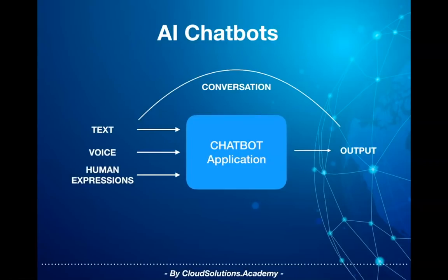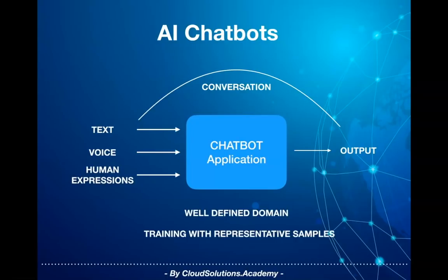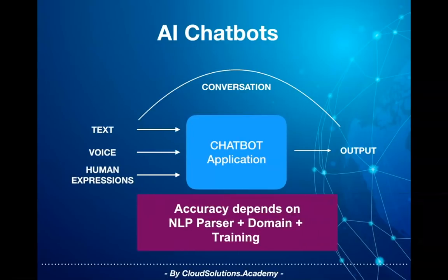A chatbot works well when the domain is well understood by the AI system. As the AI chatbot relies on NLP to understand the semantics of the input message, unless the NLP parser is trained on the domain, the accuracy of recognizing the intent and topics of interest would be very low or not as per the acceptable criteria.